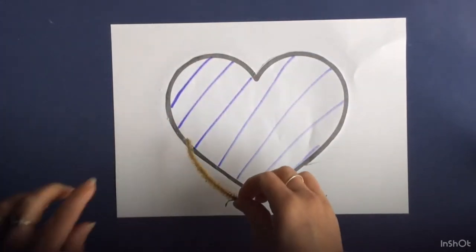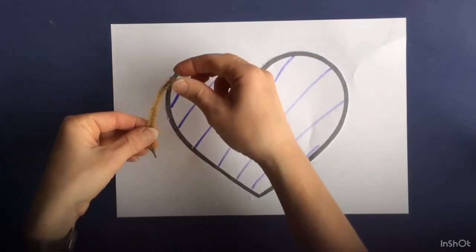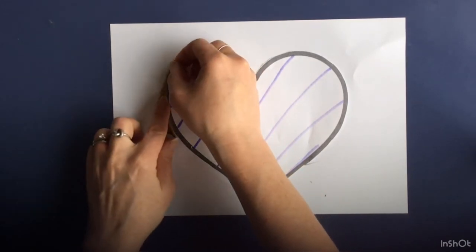And start putting on some of my leaves. Now it's a bit curvy, so I'm going to go around the curve.